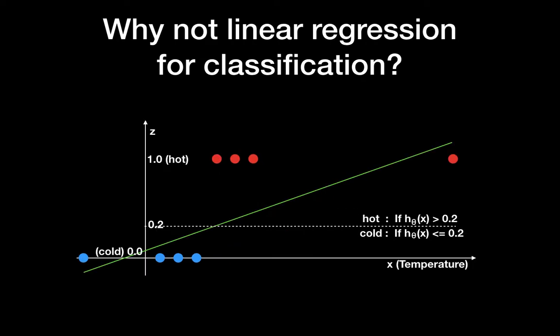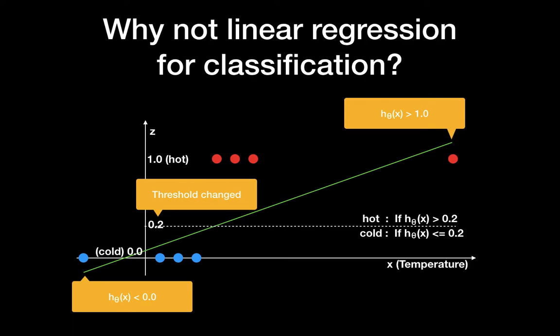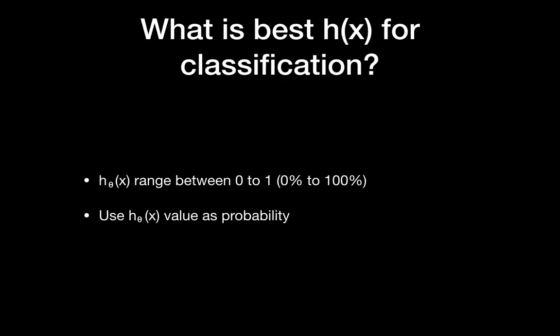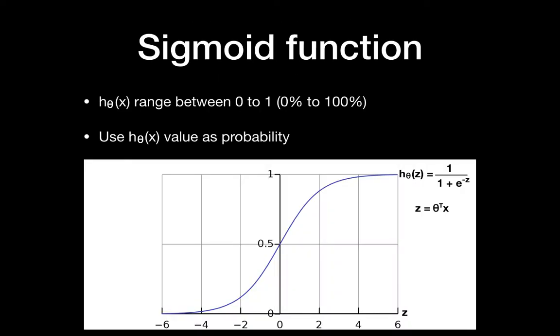But if you have a different data set distribution, with a red dot at the far right and blue dot at the far left, the threshold can shift to 0.2. This is difficult because for binary classification you want the threshold to be 0.5 — over 50% is true, under 50% is false. Also, on the far right the hypothesis h(X) can exceed 1.0 and on the far left it can go below 0.0, which is problematic since we expect the output to range from 0 to 1 as a probability.